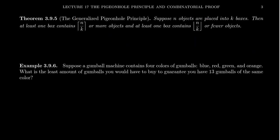Let's look at a combinatorial problem. Suppose a gumball machine contains four colors of gumballs — blue, red, green, and orange. What is the least amount of gumballs you would have to buy to guarantee that you have 13 gumballs of the same color? Be cautious: we're asking what is the least amount to guarantee 13 of the same color.